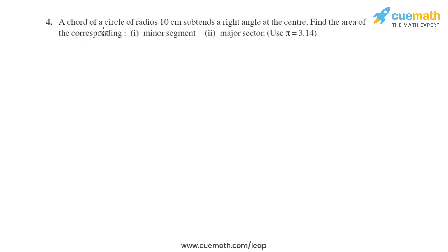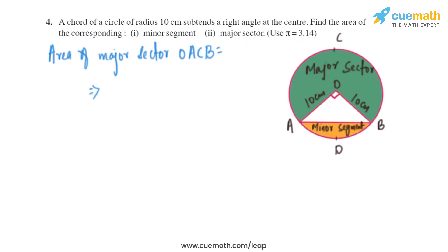Question 4 of this exercise says: a chord of a circle of radius 10 centimeters subtends a right angle at the center. Find the area of the corresponding minor segment and major sector. Use pi equal to 3.14.